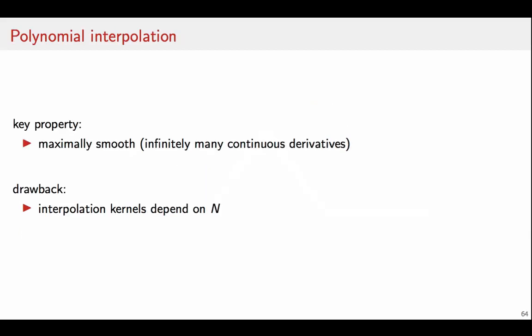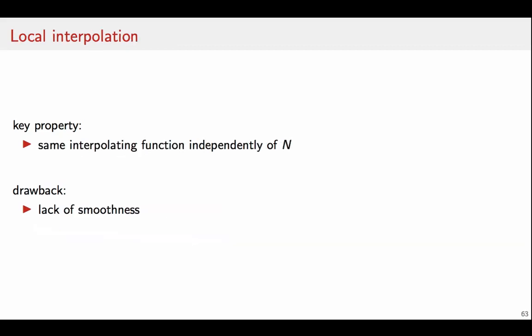So with polynomial interpolation, the advantage is that we have a maximally smooth interpolation, but the drawback is that the interpolation kernels depend on the length of the interpolation interval. Conversely, with local interpolation, we have the same interpolation kernel independently of the length of the dataset, but the problem is that we have a lack of smoothness.